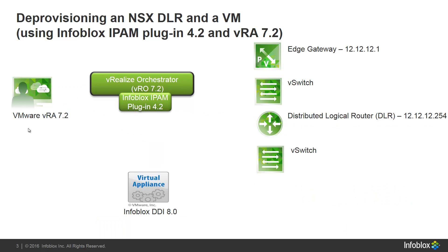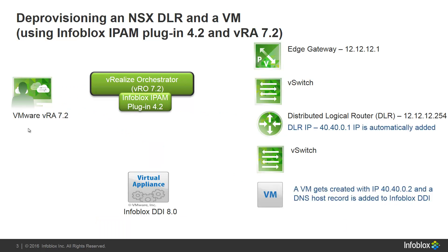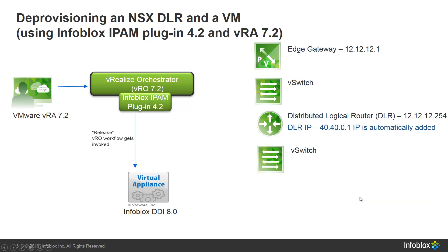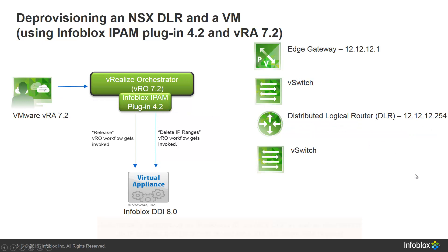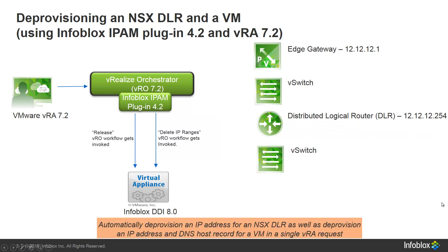Similarly, if I want to deprovision the environment, I'll submit a deprovision request, and the release workflow will be automatically invoked, which will shut down the virtual machine and delete the IP address. Shortly after, the Delete IP Ranges workflow will be automatically invoked to delete the DLR IP address. With a single request, you can deprovision both the DLR IP address as well as the DNS host record and IP address for the virtual machine.